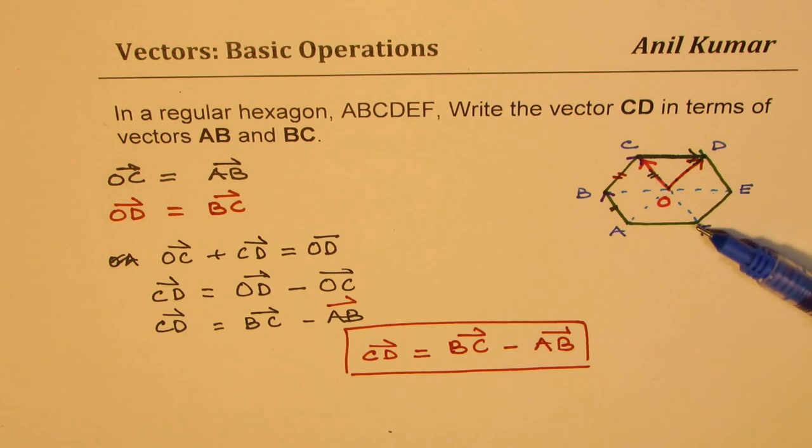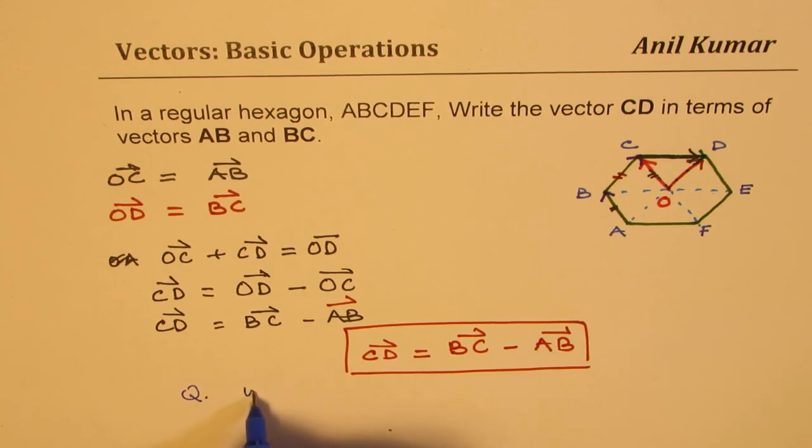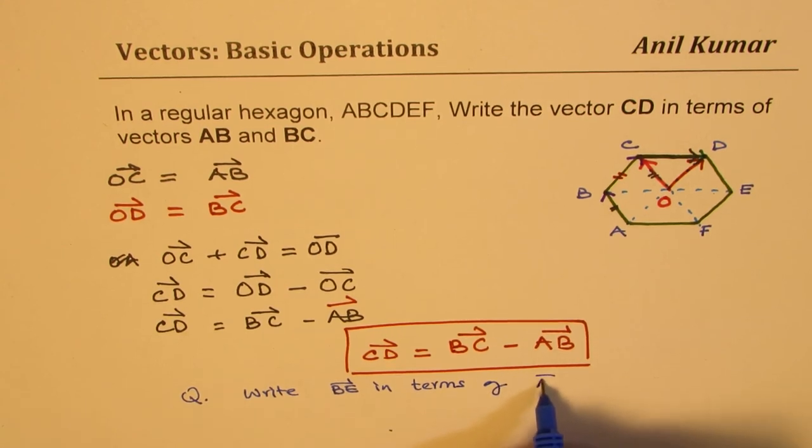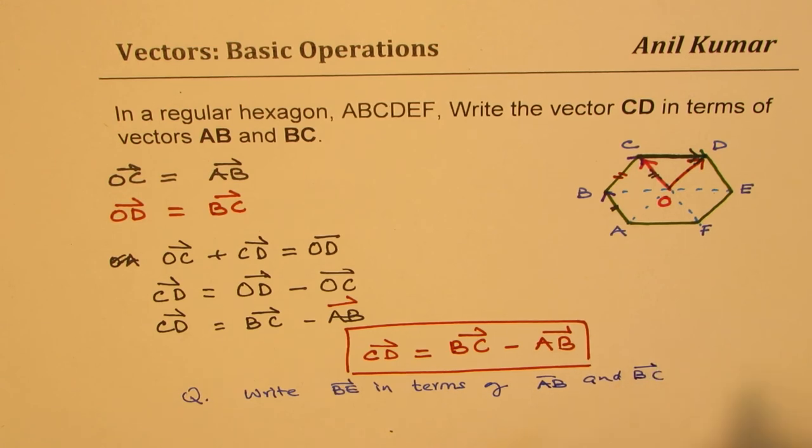So now the question for you is: write vector BE in terms of vector AB and BC. That is your question now. I hope that helps. Feel free to write your comments and share your views. If you like and subscribe to my videos that'd be great. Thanks for watching and all the best.